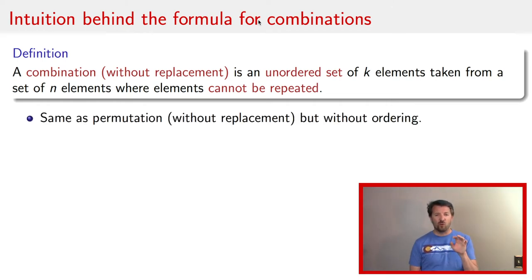So if we take the formula for permutation without replacement, if you remember, or if you go back and watch that video, the formula for permutation without replacement was n factorial divided by n minus k factorial. And now the question is, well, how many different ways are there to order those k elements? Well, that is just a permutation. There are k factorial ways of ordering all k of those elements, as we showed in that previous video.